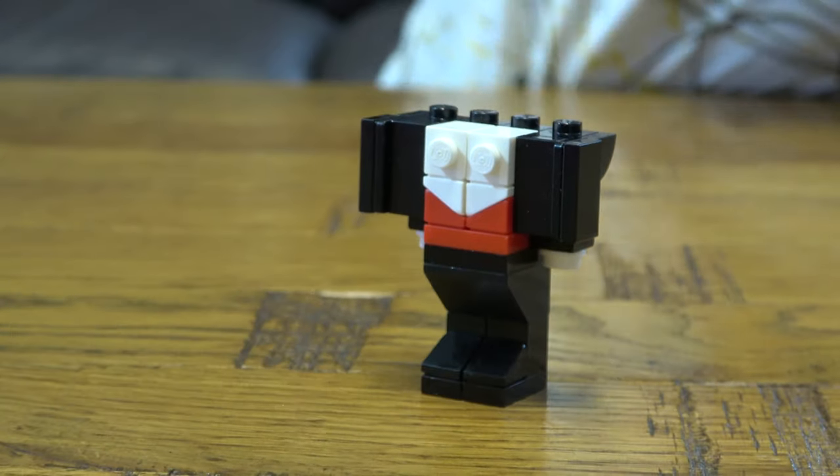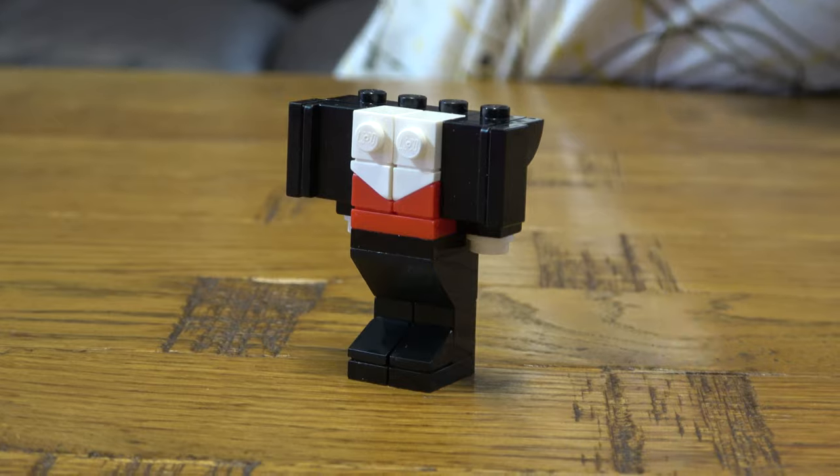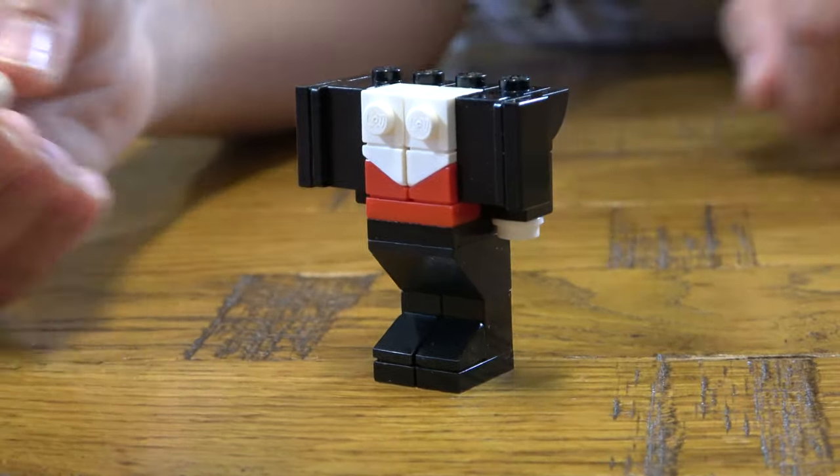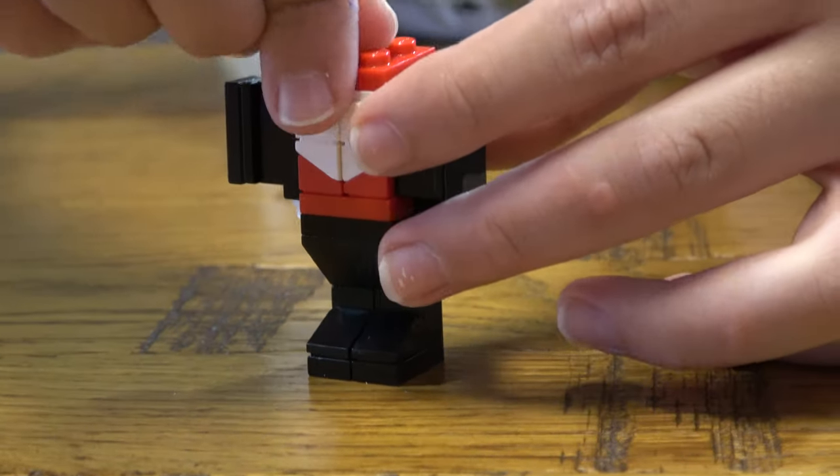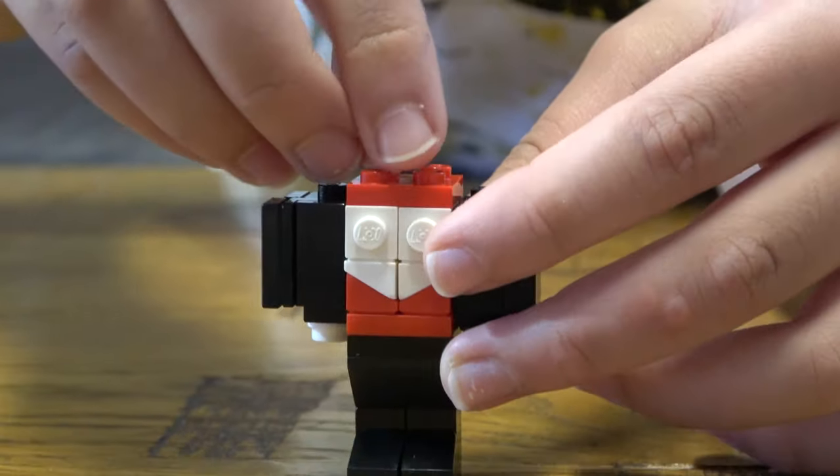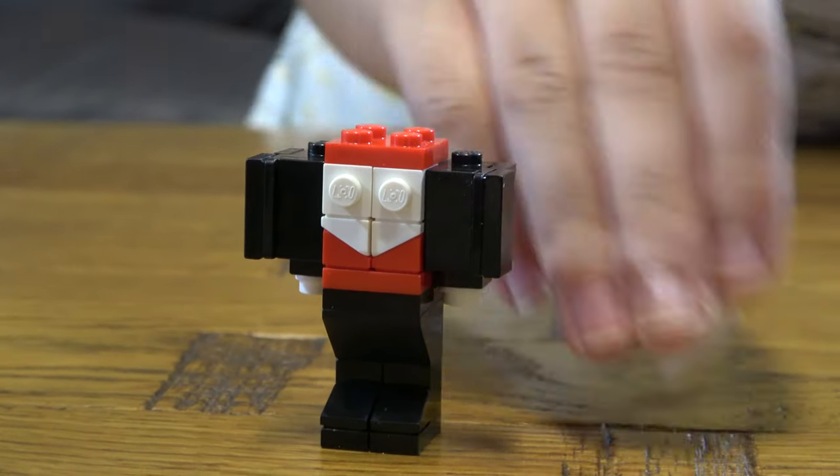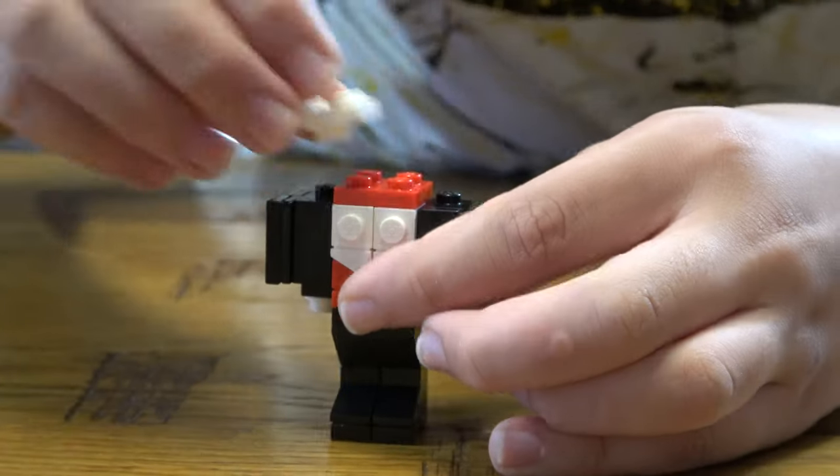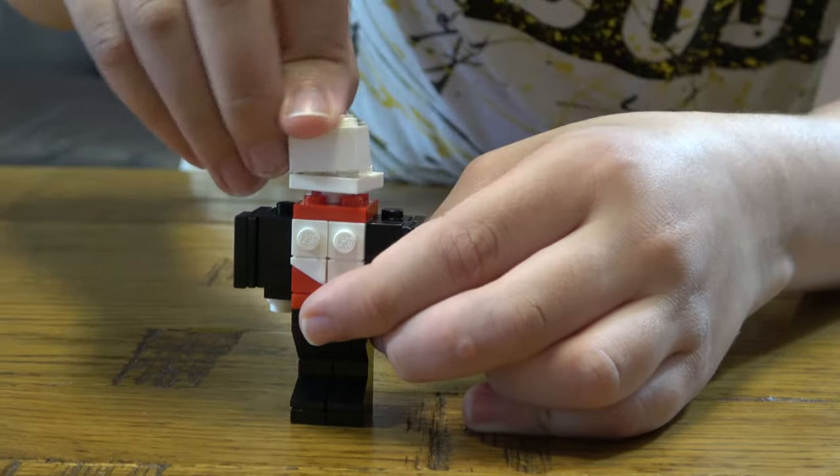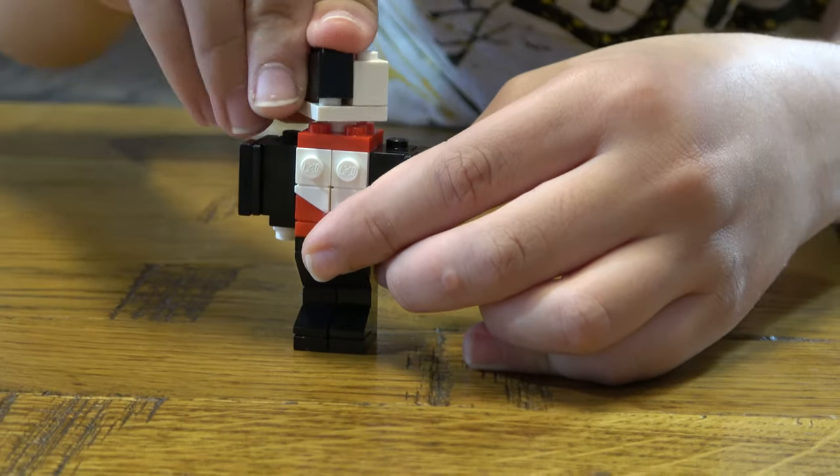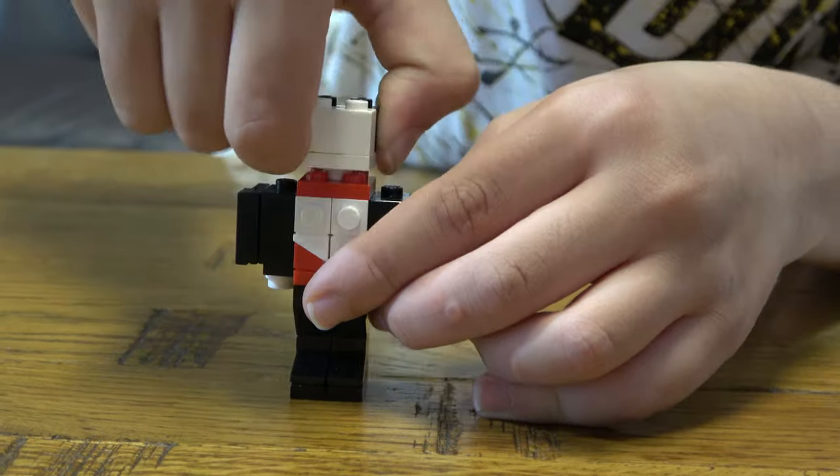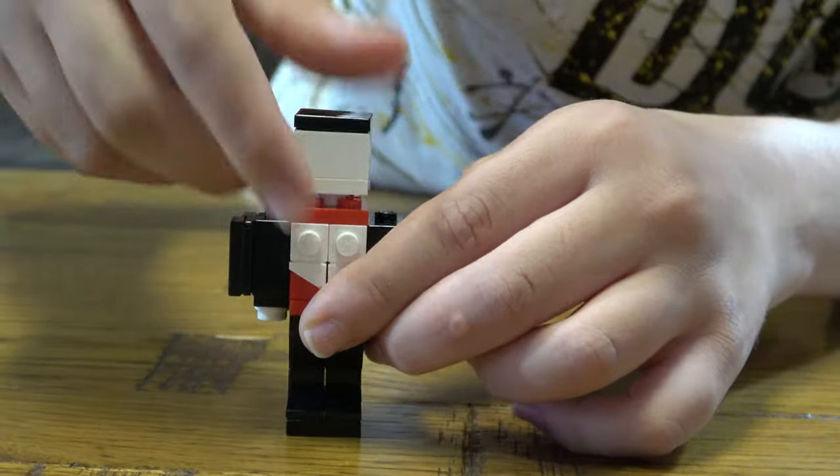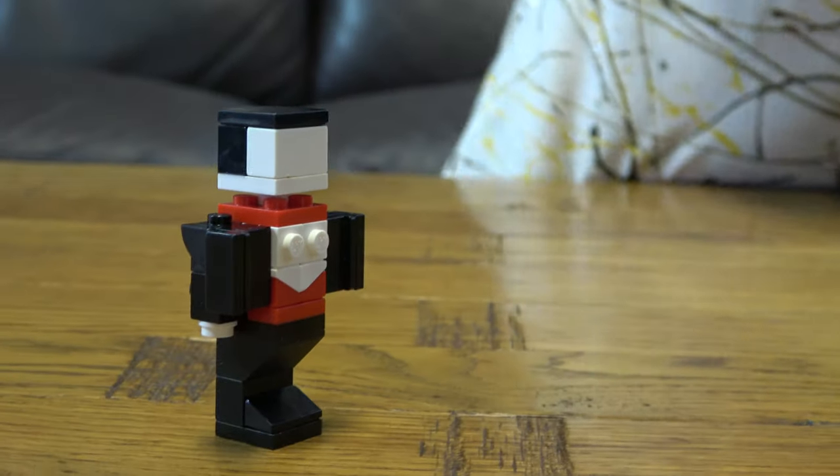Next thing we need to do is, wait no, first we get one of these, we place, we get this, we put this like that, then we put it onto here. We place this here, turn it around, we put this here and then place this flat tile on top for the hair like this.